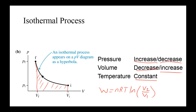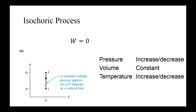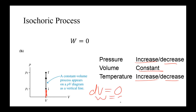For an isochoric process, the volume is constant. When pressure increases, temperature also increases; when pressure decreases, temperature decreases. Since volume is constant, dV = 0, and therefore the work done by the system is zero. That's quite simple when you have an isochoric process — the work done is always zero.